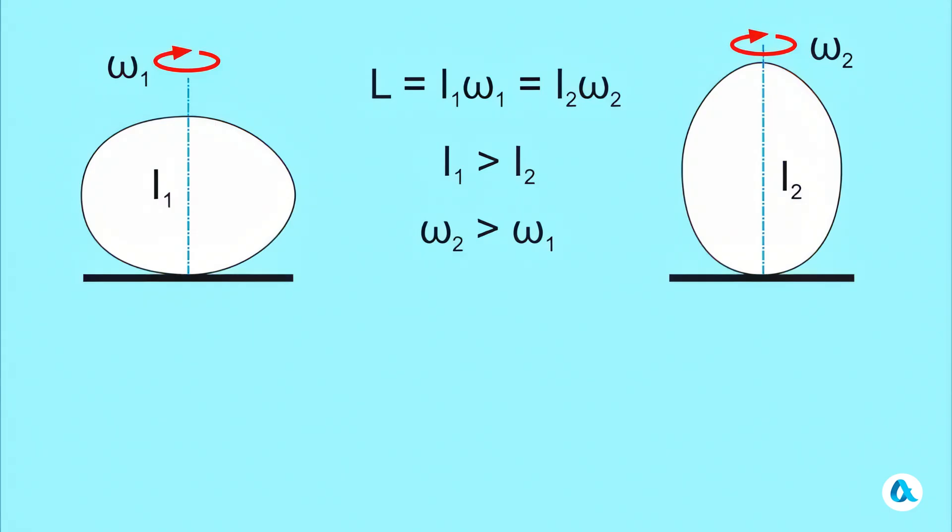If the egg isn't slowed down by friction, then its energy is also conserved. The initial rotational energy was equal to one half of I1 times omega 1 squared. And it is partially converted into rotational energy, one half of I2 times omega 2 squared, and partially into potential energy, mgh, because the egg's center of mass has risen by a height h.